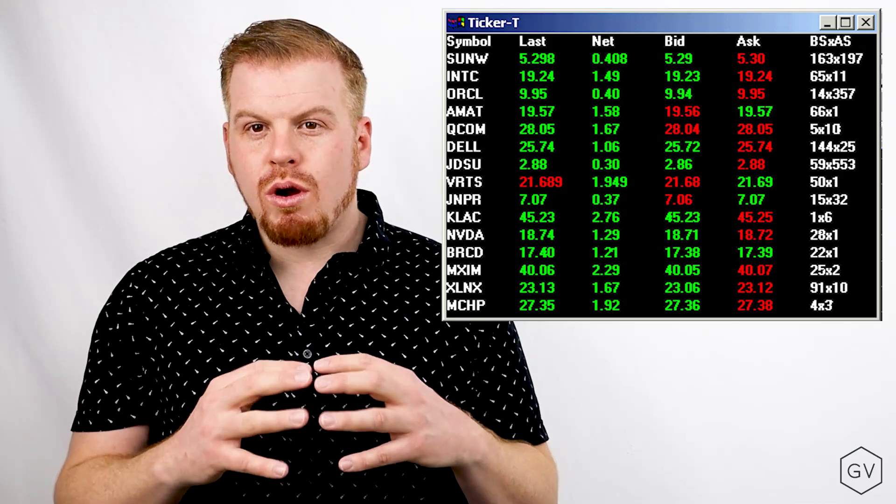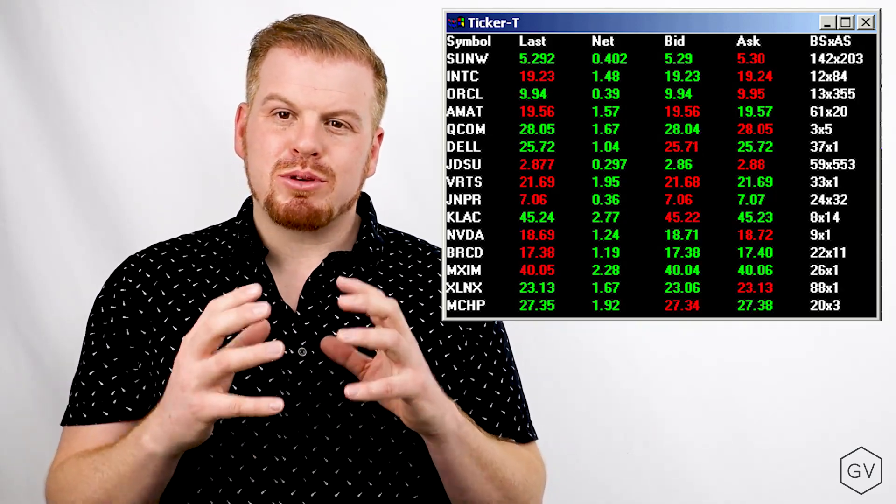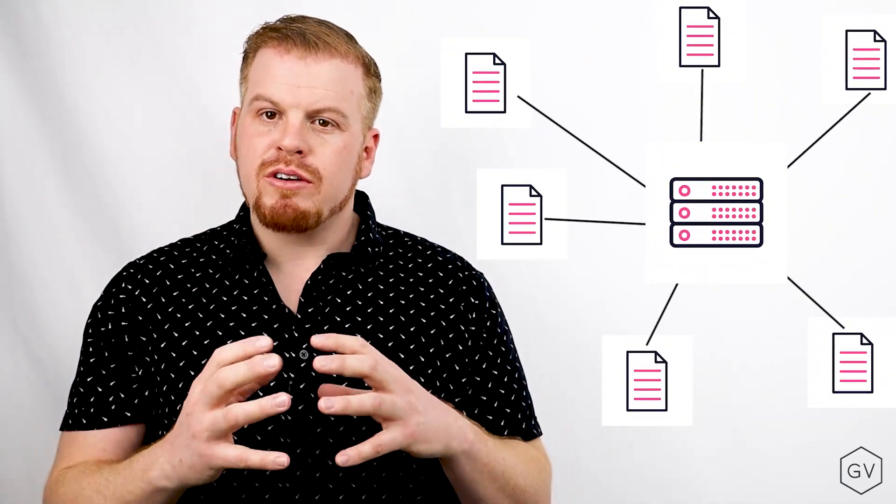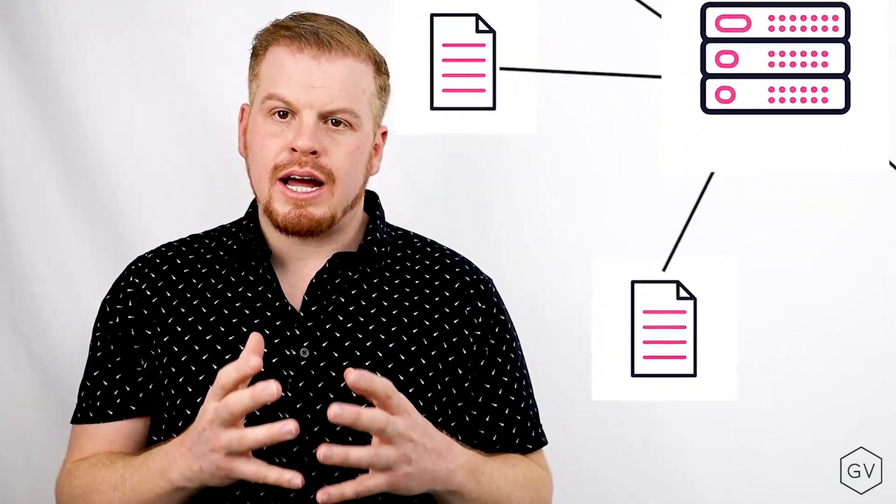These selling points of building on the Solana ecosystem allow market makers to refresh quotes across the order book several times per second, and it allows the internal Zeta risk engine to monitor for any options that are under collateralized that may be subject to liquidation.